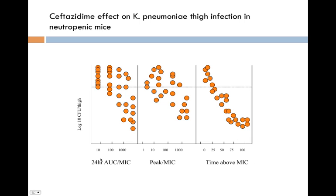As we increase the AUC to MIC ratio, we see bacterial counts go down, but even at 1,000 times AUC over MIC, there's still some lack of effect. We see a little better correlation with peak to MIC ratio, but the strongest correlation is with time above the MIC. So this is a time-dependent killer. Ceftazidime is a beta-lactam — we're not surprised.